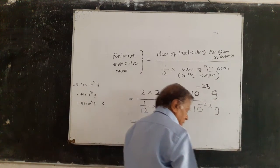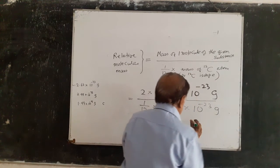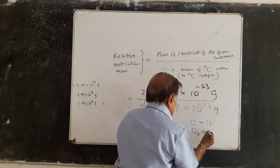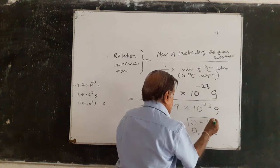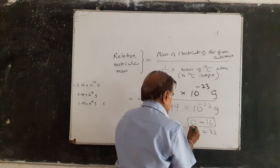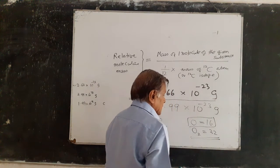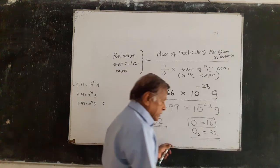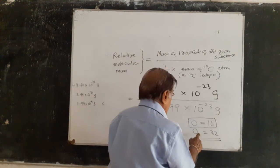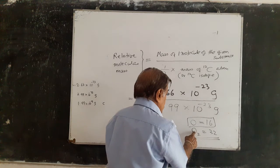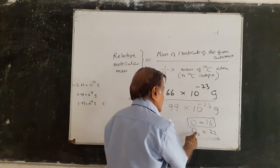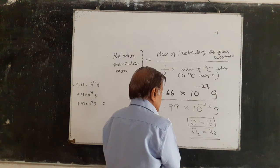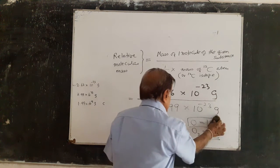Relative molecular mass is the mass of the molecule of the given substance relative to the atomic mass unit. For O2 — you know that the relative atomic mass of O is 16, therefore O2 is 32. Relative atomic mass is 16, therefore the relative molecular mass is 32. It is easier to use that way. O2 is 32 — that means the mass of one molecule of oxygen is 32 times the atomic mass unit.